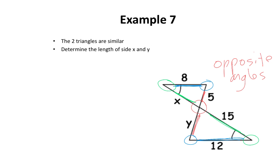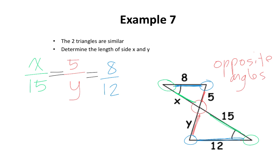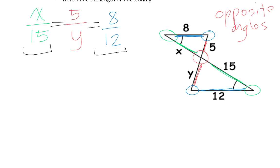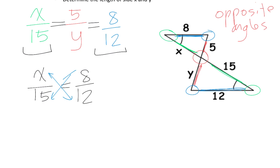Since there are no vertex labels, I'll go straight to the variables and numbers. X corresponds to 15, 5 corresponds to Y, and 8 corresponds to 12. To find X, I'll use X over 15 equals 8 over 12 — I chose 8 over 12 because both the numerator and denominator have numbers. Cross multiplying gives X multiplied by 12 equals 15 multiplied by 8.